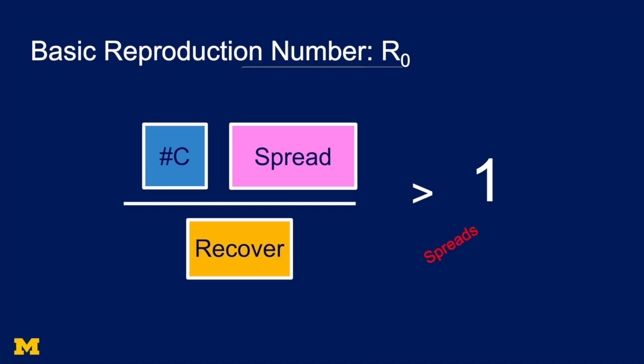If we move the probability of recovering down to the other side, we get the following inequality. If the number of contacts times the spread divided by the recovery rate is bigger than one, the disease is going to spread. This term on the left hand side is known as R0, the basic reproduction number.